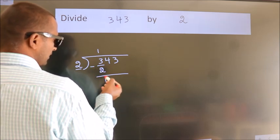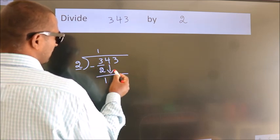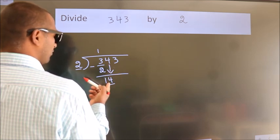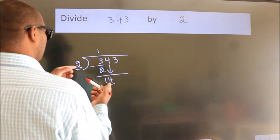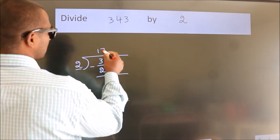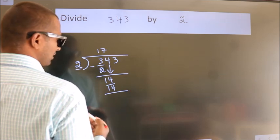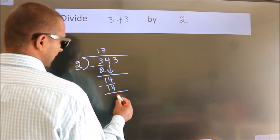After this, bring down the beside number. So 4 down. So 14. When do we get 14? In the 2 table. 2 times 7 is 14. Now we subtract. We get 0.